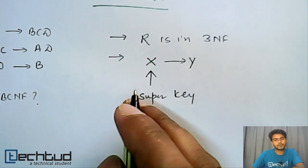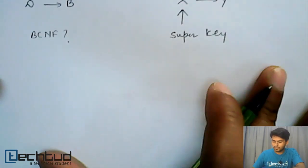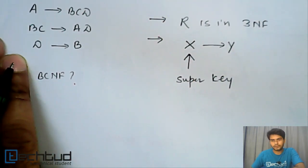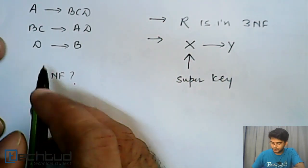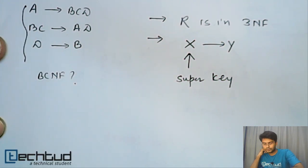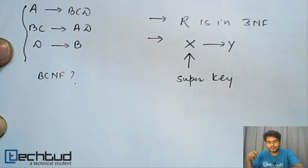Okay, so this X should be a key. Now in this example, if you find out which we have studied up to 3NF, so if you go and determine whether it is 3NF or not, this relationship is in 3NF already.